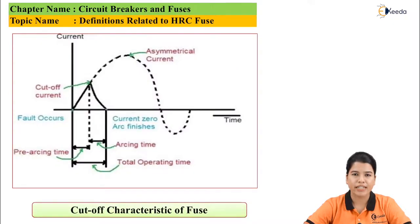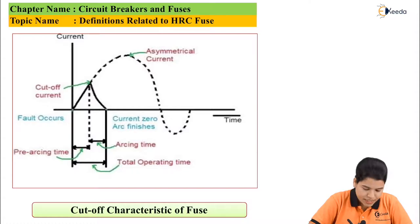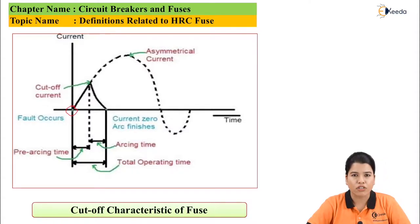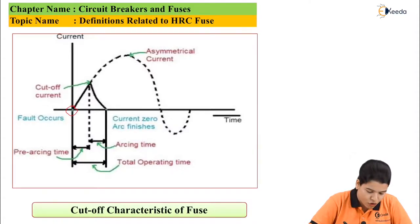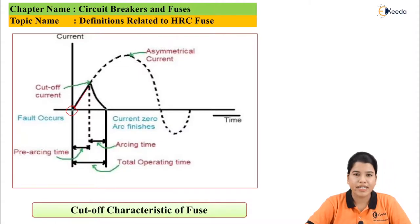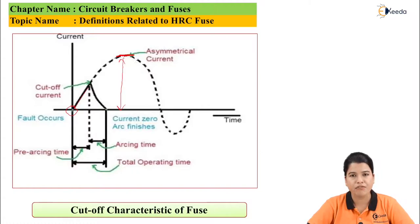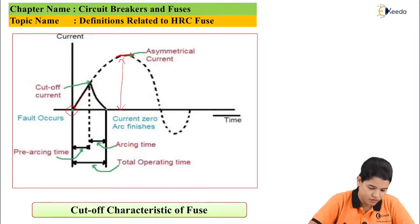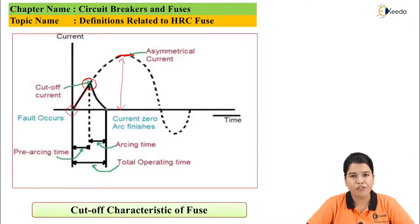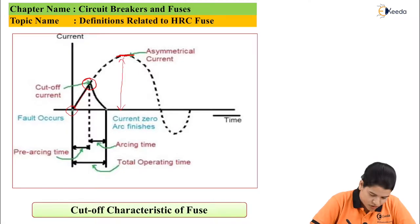The figure shows the cutoff characteristic of the fuse. This is the point at which the fault occurs, and from here the fault current starts rising. This peak value of current is the prospective current — that is the current which would have flown through the system if the fuse was not present. This is the cutoff current, which does not allow the fuse current to reach its prospective peak.